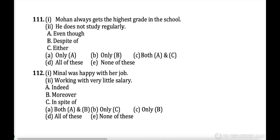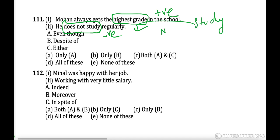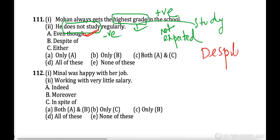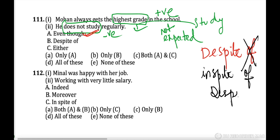Next: 'Mohan always gets the highest grade in the school. He does not study regularly.' Getting the highest grade is positive; not studying regularly is negative — something unexpected is happening, giving a contrasting idea. 'Even though' can be used. 'Despite of' is incorrect — with 'despite,' 'of' is never used. 'Either/or' is used for choice, so also incorrect. The answer is option A: 'even though.'